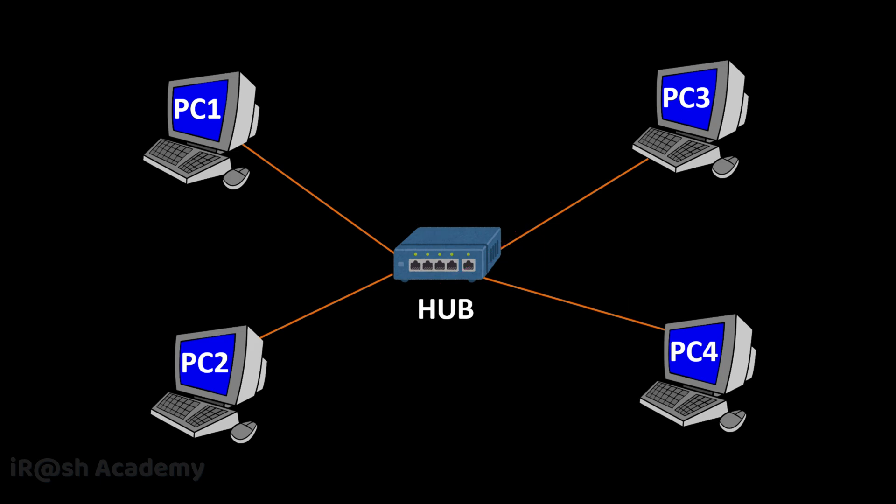Consider an image where four devices are connected to one network hub. That means at a time, only one device out of those four can send or receive data.